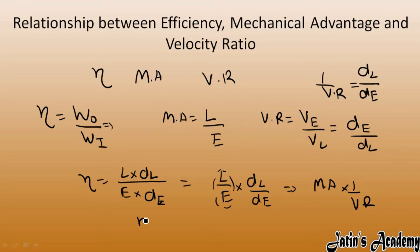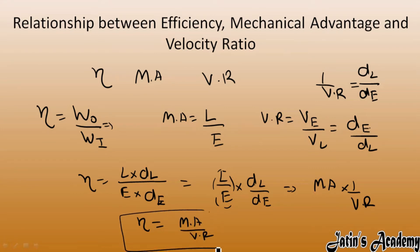So here, efficiency equals mechanical advantage over velocity ratio. This is the formula of efficiency in terms of mechanical advantage and velocity ratio.